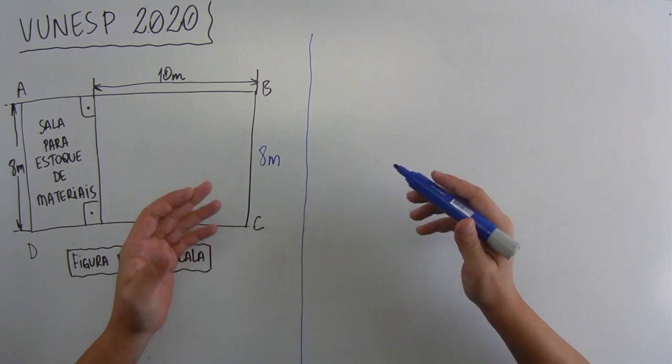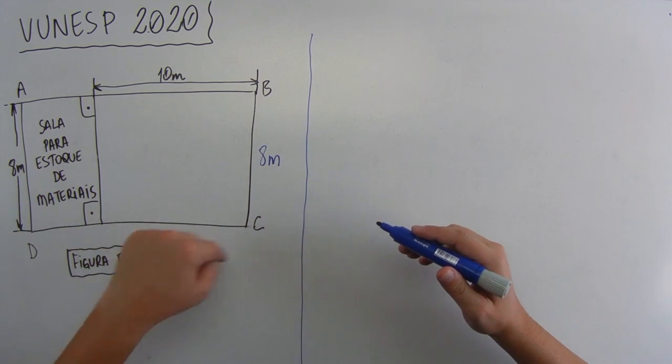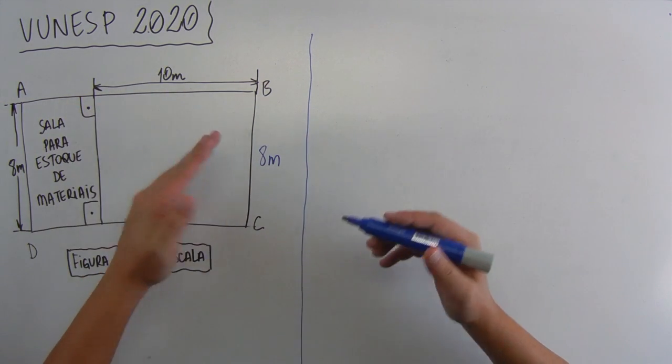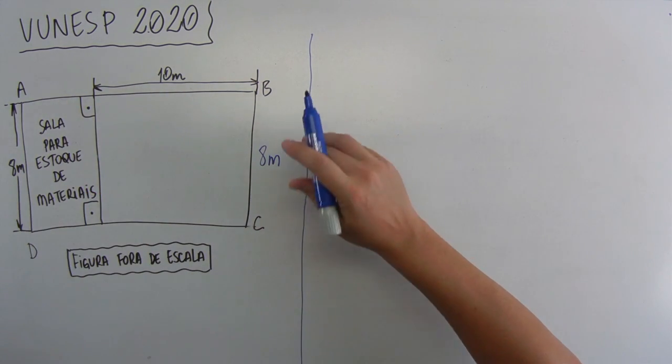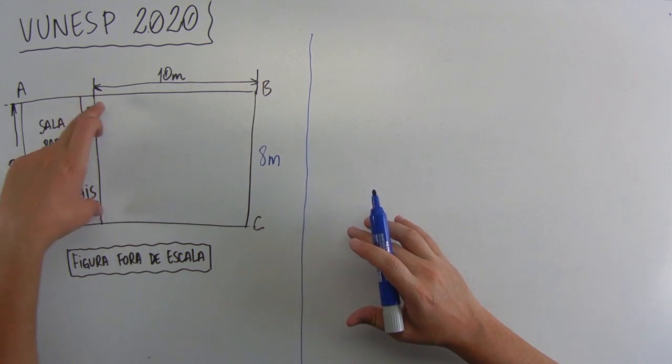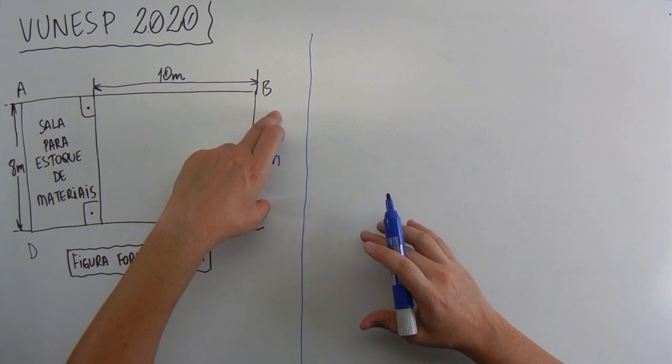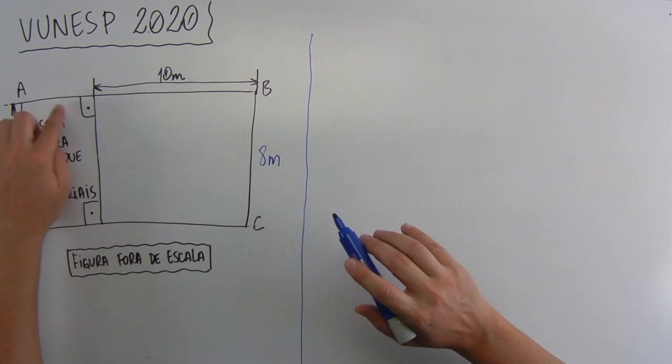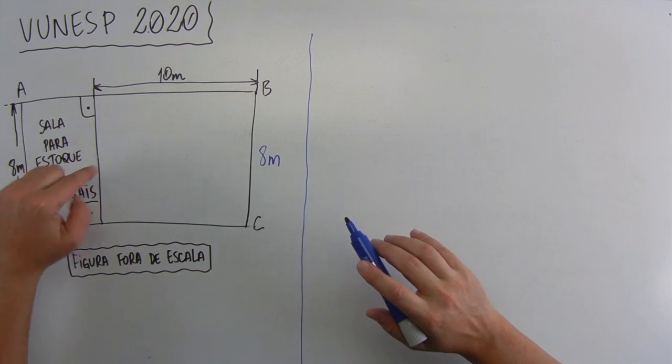Uma sala retangular ABCD, então tá aqui retangular ABCD, é um retângulo. Tudo isso aqui é a sala inteira, acabei esquecendo de falar, com 8 metros de largura. Então, tá aqui 8 metros, então 8 metros e 8 metros. Teve parte de sua área reservada para estocar materiais. Então, esse pedacinho aqui é pra estocar materiais, conforme mostra a figura.